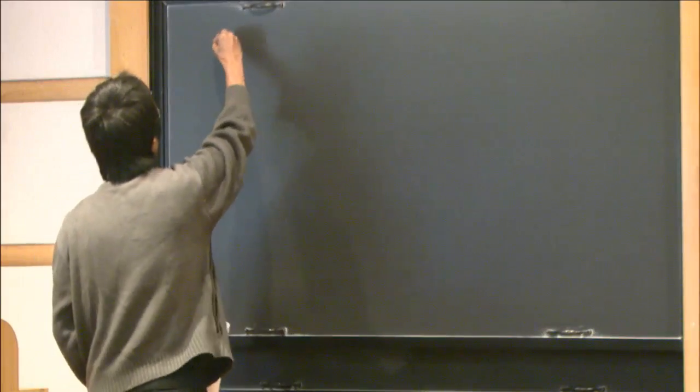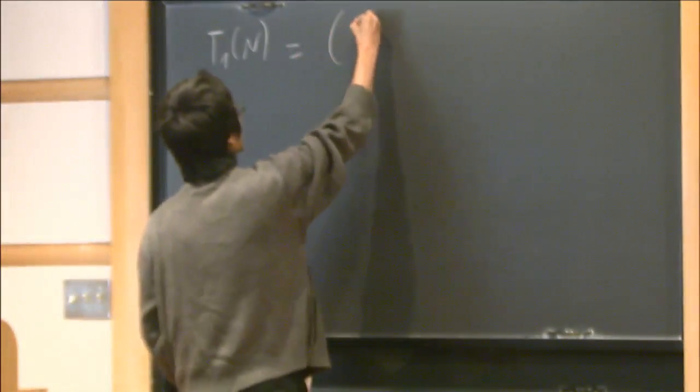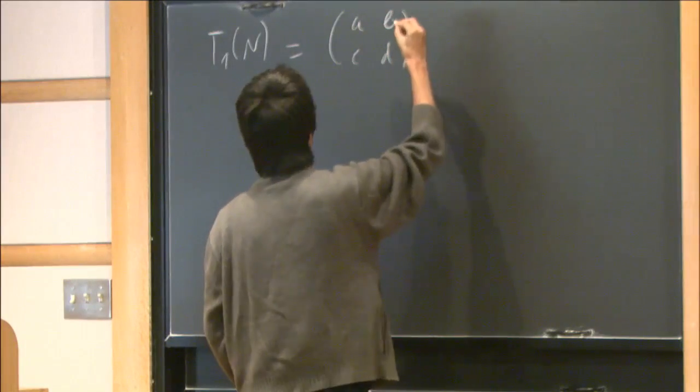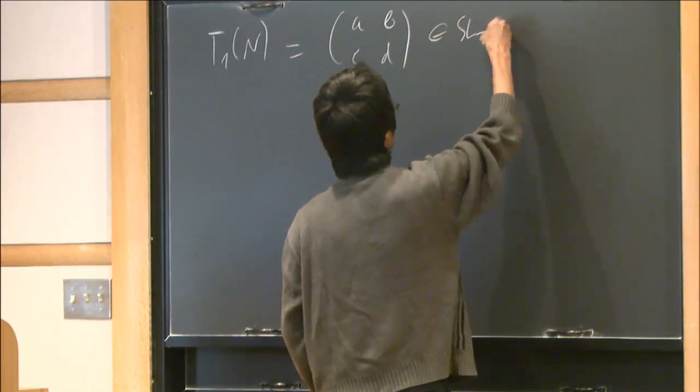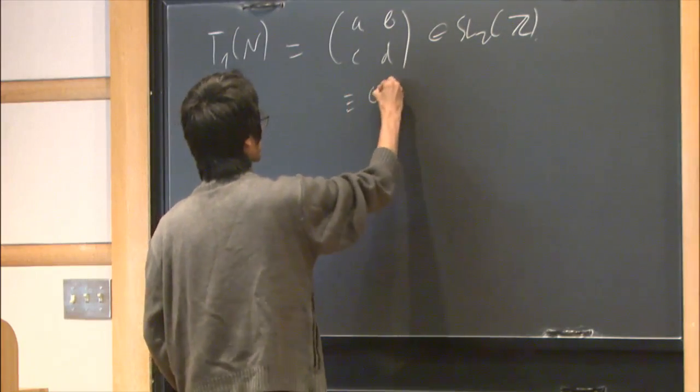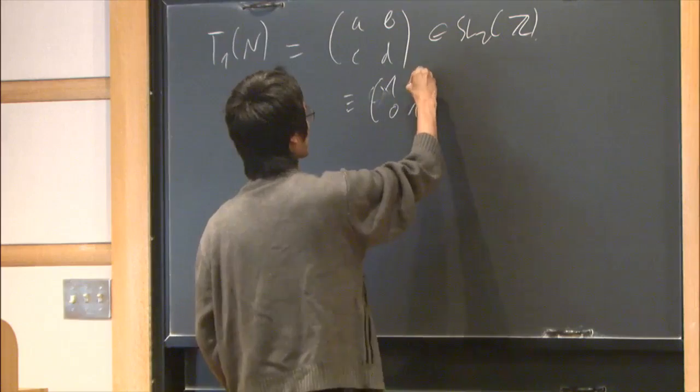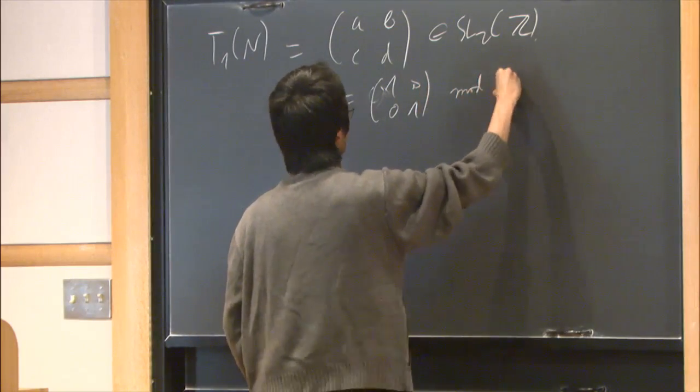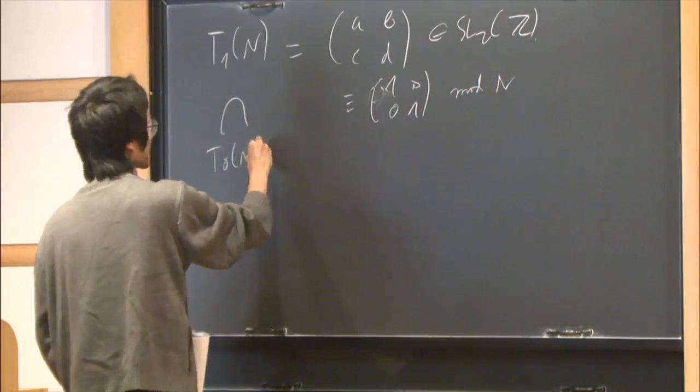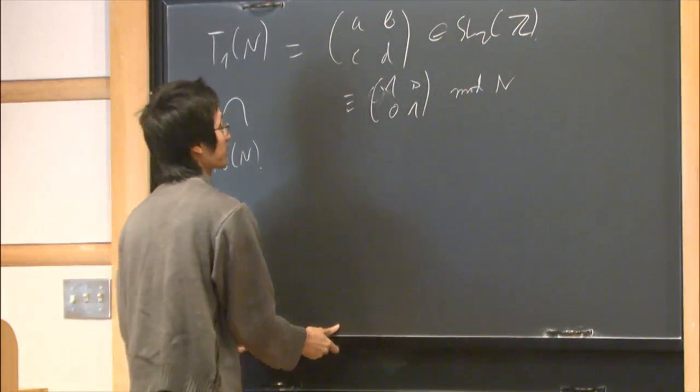To begin with let's recall what modular forms are. I have this arithmetic group, a group of two by two integral matrices which are congruent to an upper triangular unipotent matrix mod n. And there's a slightly larger group defined in essentially the same way where I demand it's congruent to an upper triangular matrix mod n.